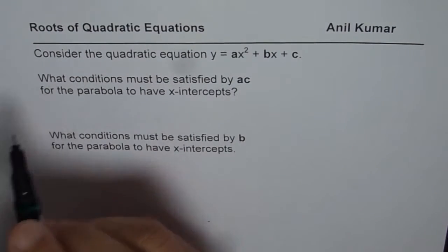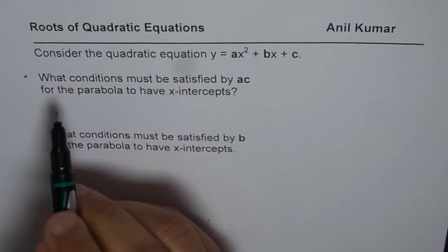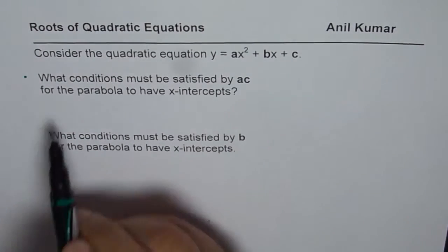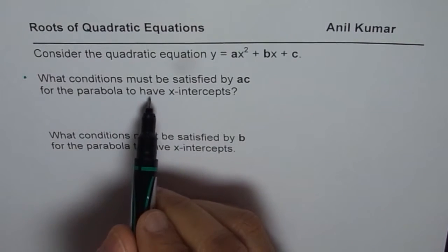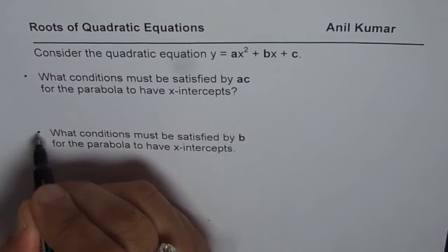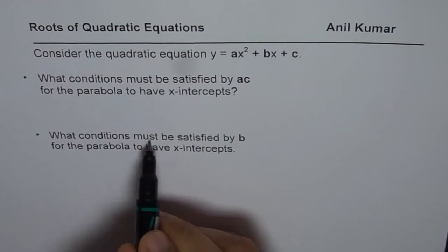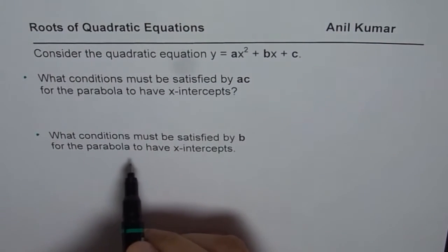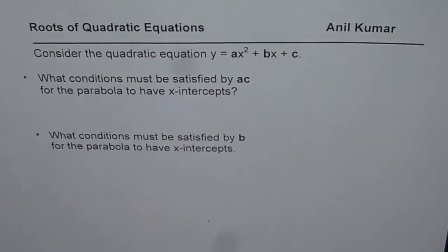The first part of the question is what conditions must be satisfied by ac, that is product of these two, for the parabola to have x-intercepts? And the second part is what conditions must be satisfied by b, the coefficient of x, for the parabola to have x-intercepts?